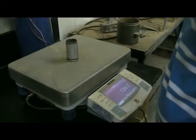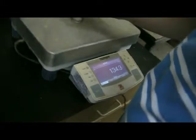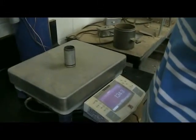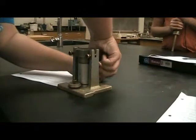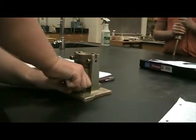Next, weigh the compaction mold and record the weight. Put the collar on the mold and tighten it down to secure the mold in place.